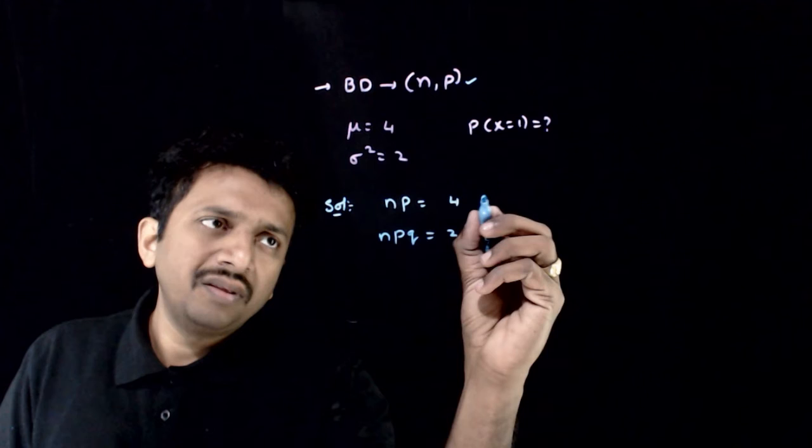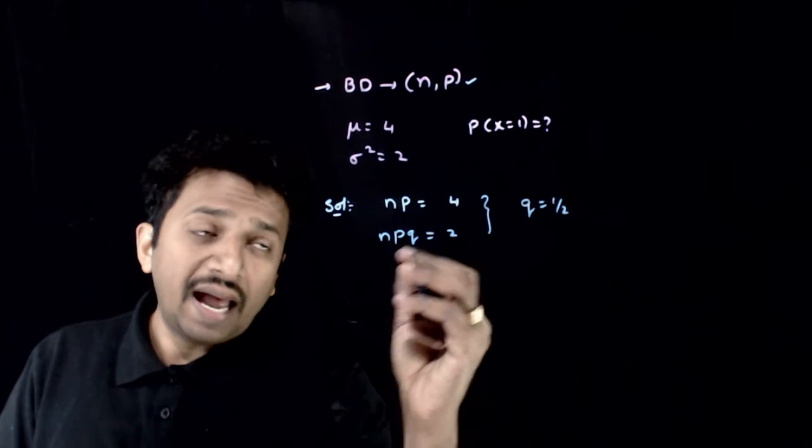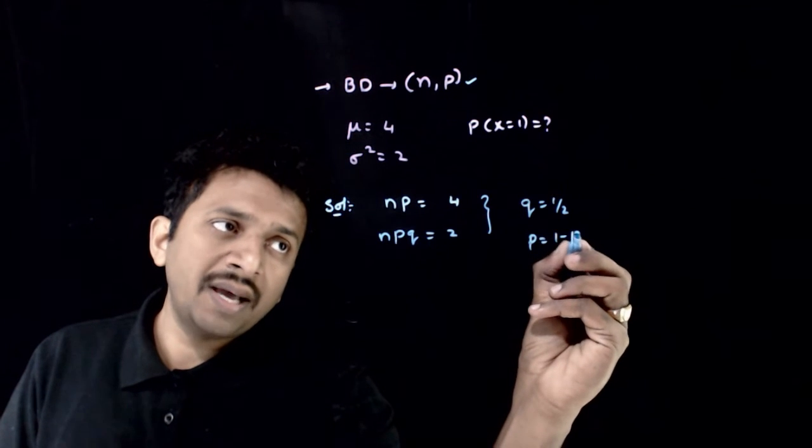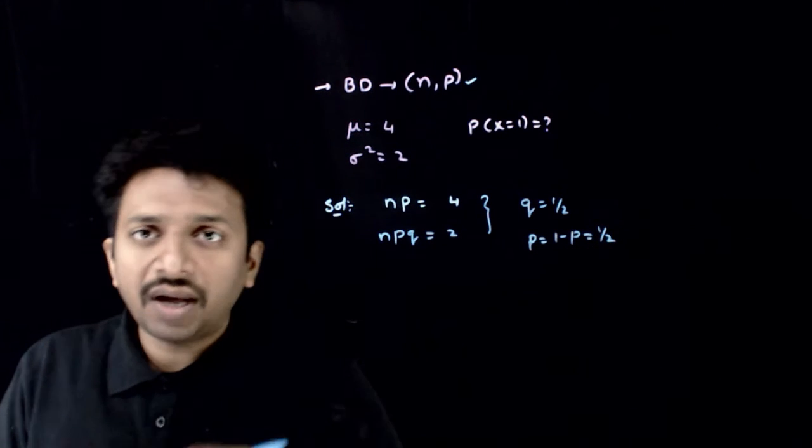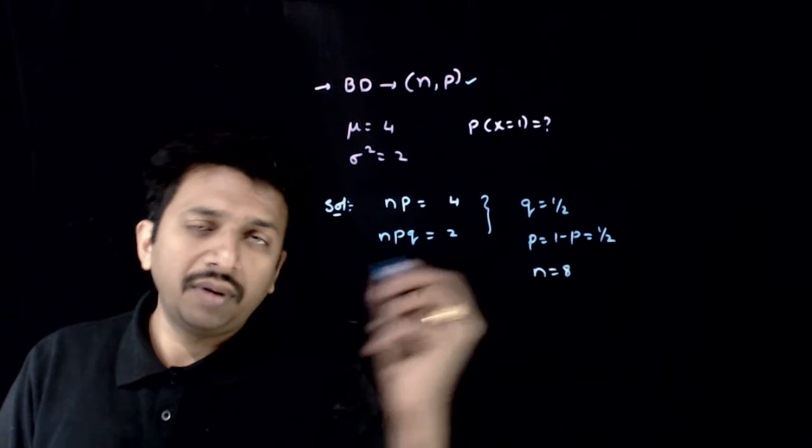From these two, if you divide these two, you can find that Q is equal to half. And if Q is equal to half, P has to be equal to 1 minus Q, which is also equal to half. And if P is equal to half, N has to be equal to 8.